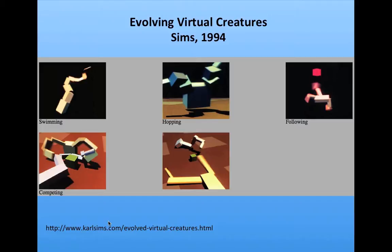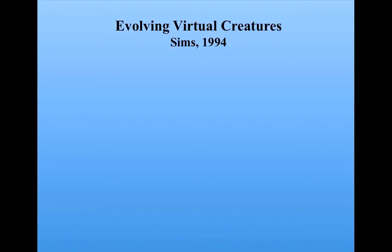His goal was to evolve creatures that were made up of these block-like structures that could swim, hop, follow light, and compete in certain ways, which we'll see in a few minutes. These were all virtual creatures in that they existed inside of a computer simulation of physics. The goal here was to evolve these creatures so that they were lifelike in some way.